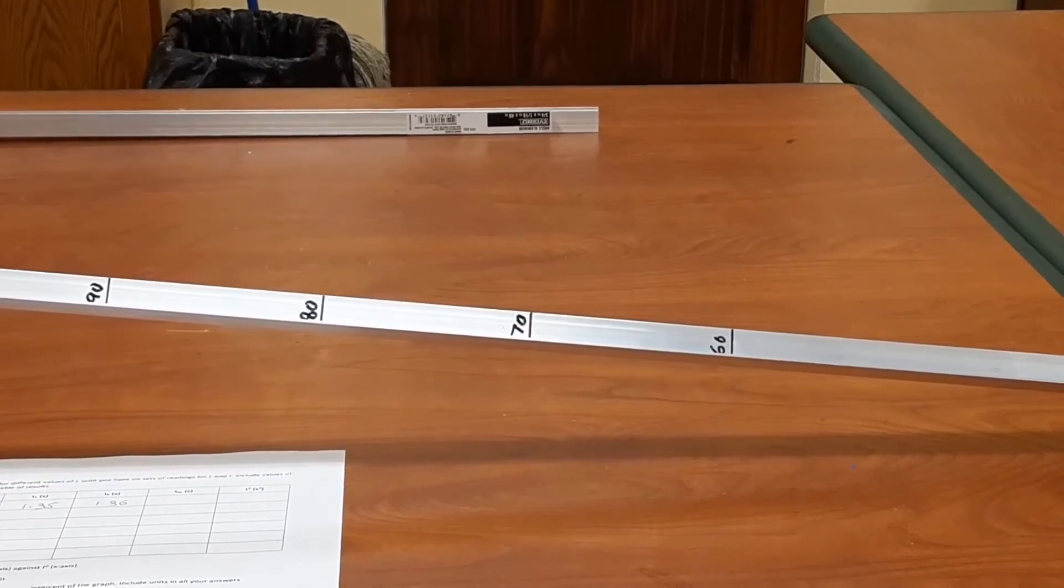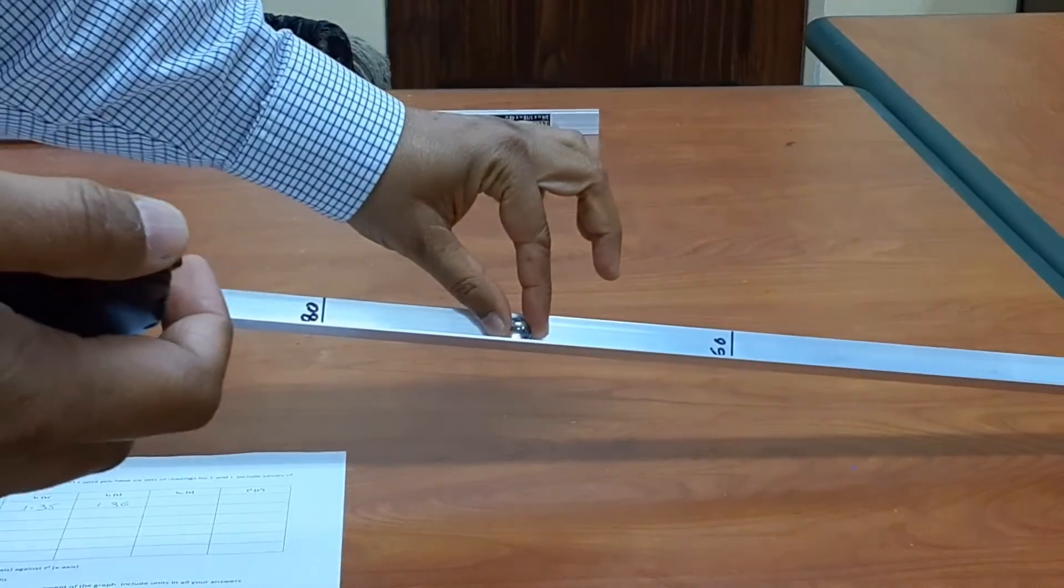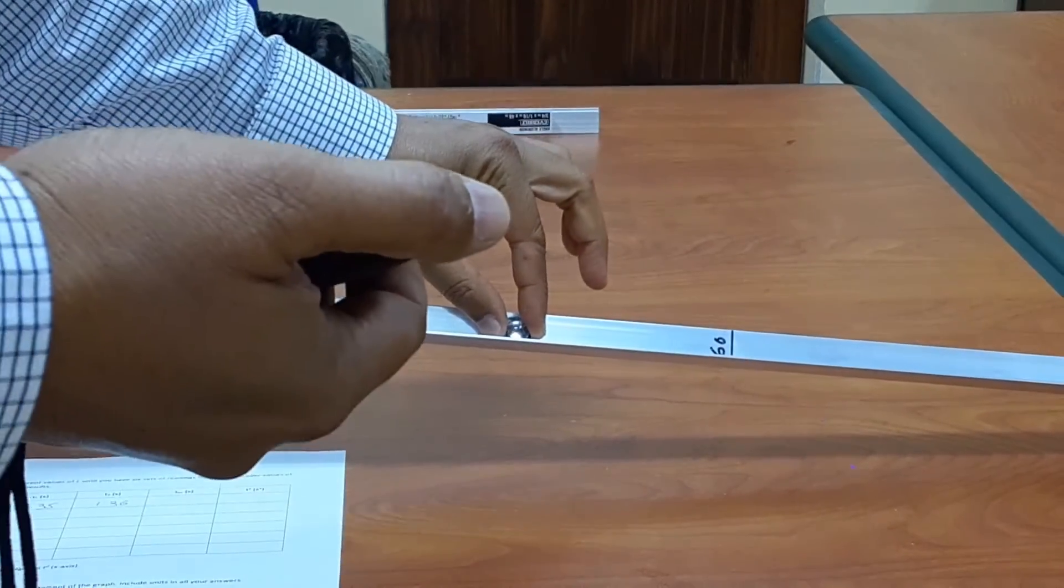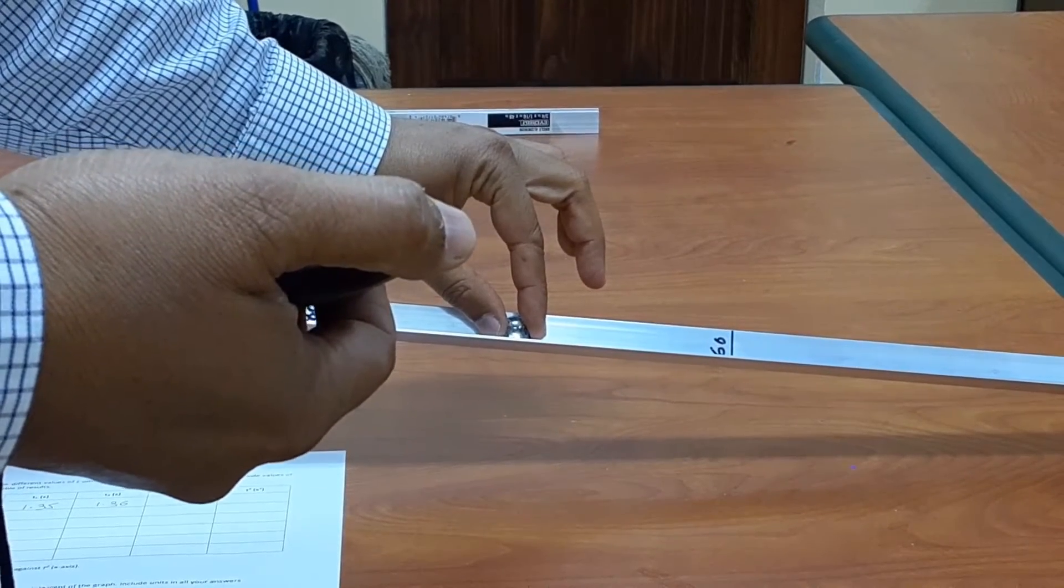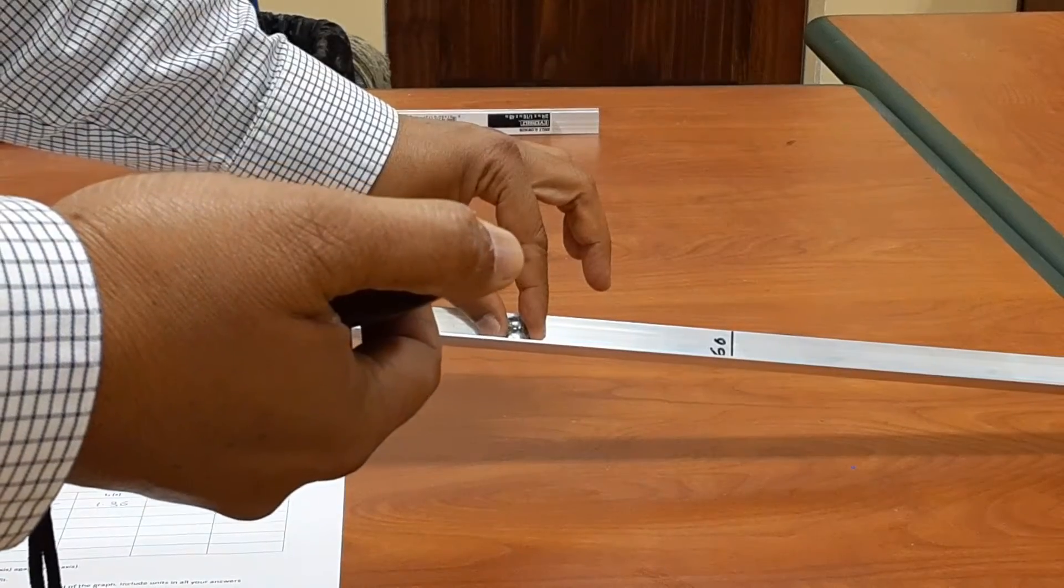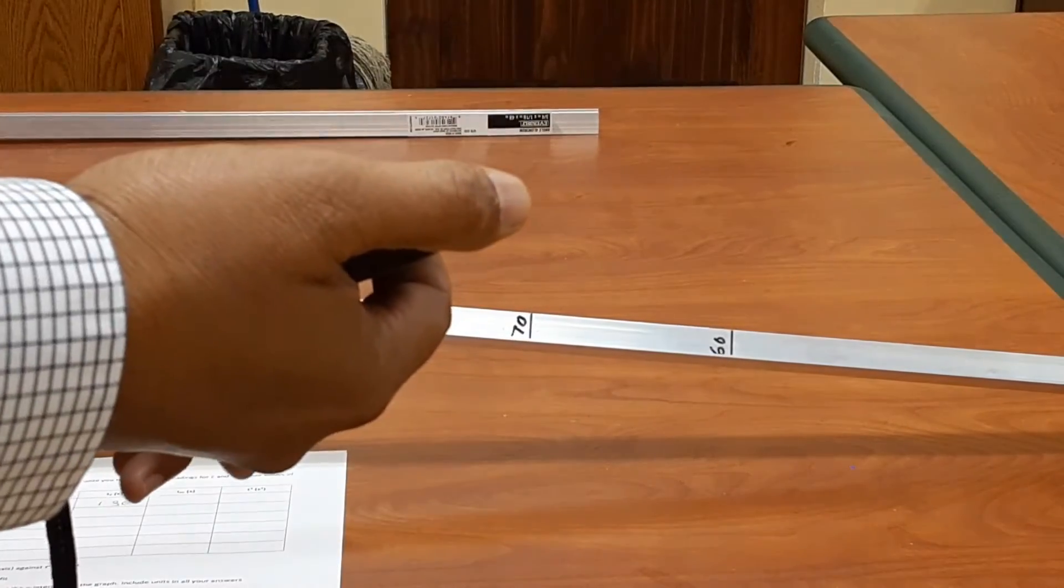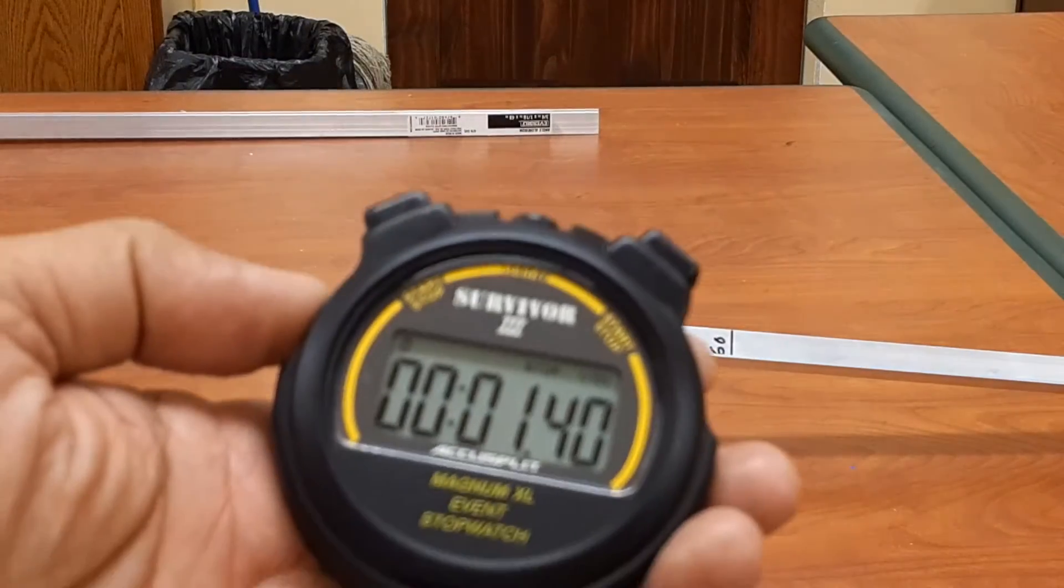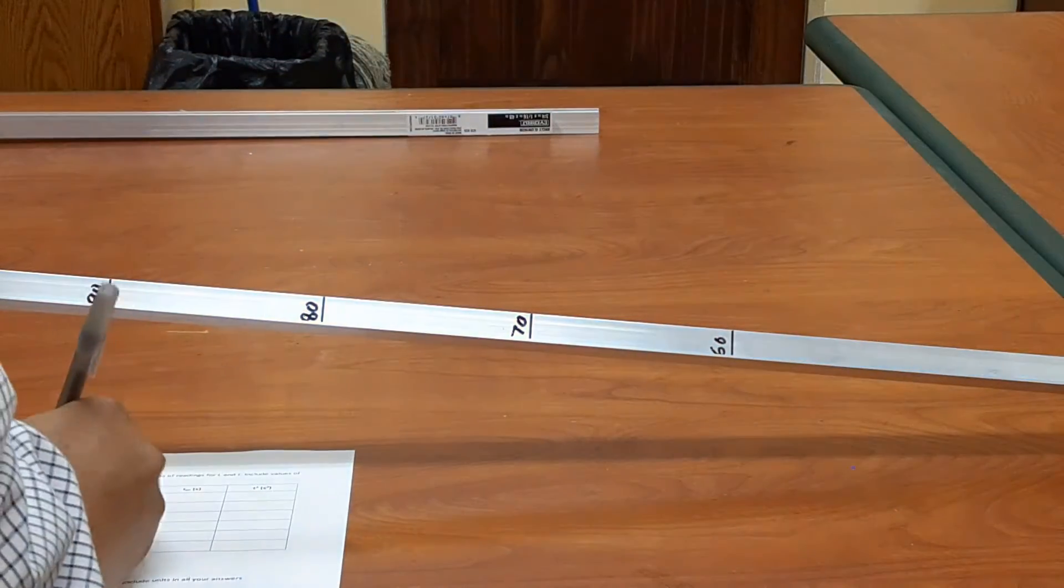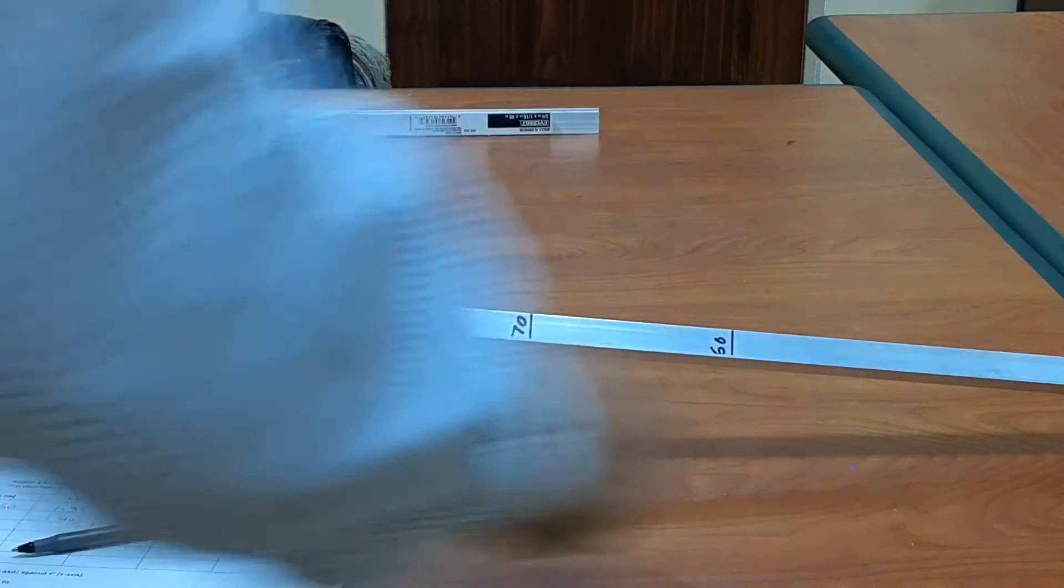So I will now release the ball at the 70 centimeter mark. And as the ball is released, I will start the stopwatch. So here we go. One, two, three. And the time is 1.40 seconds. So let me write that down. 1.40 seconds.